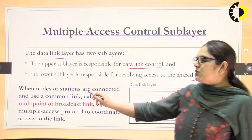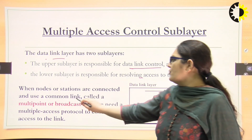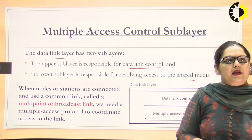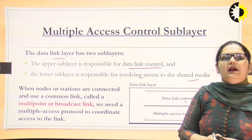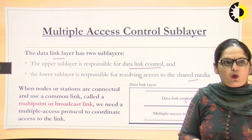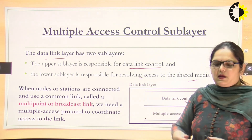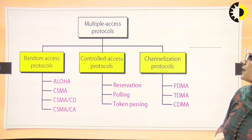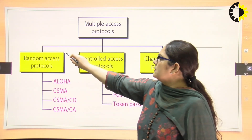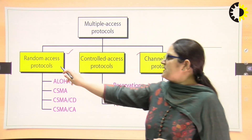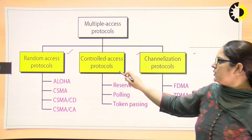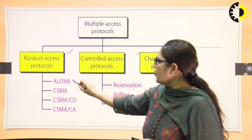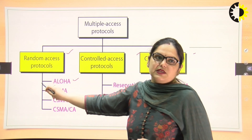When nodes or stations are connected and use a common transmission media or link, that is known as a multipoint or broadcast link. We need a multiple access control protocol to coordinate the access to the link. For multiple access control, we have three types of protocols: random access protocols, controlled access protocols, and channelization protocols. The Aloha protocol comes under the random access protocols.